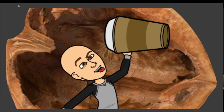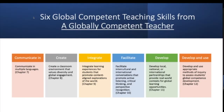In the book you have come across these six global competent teaching skills. These skills are: learning how to communicate, in this case maybe in multiple languages; how to create a classroom environment that values diversity and global engagement; how to integrate learning experiences that promote content-aligned explorations of the world; how to facilitate intercultural and international conversations that promote active listening, critical thinking, and perspective recognition; how to develop local, national, or international partnerships for real-world global learning; and how to develop and use appropriate methods of inquiry to assess students' global confidence development.